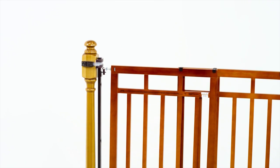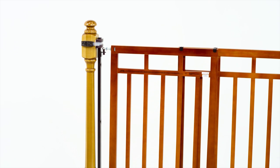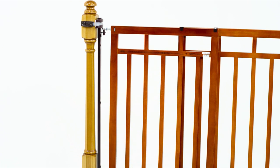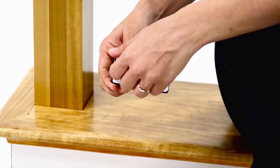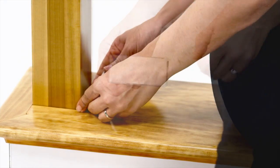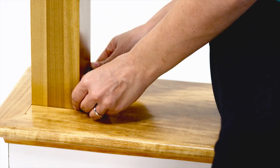For a square top banister, use only the square adhesive brackets to attach the hinge side and catch side supports. Peel the backing from one adhesive bracket, align with the floor, and press to stick to the banister.